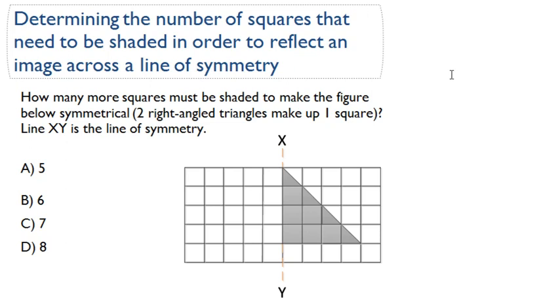So in these problems, we're given the line of symmetry, and all we need to do is figure out how many squares we need to shade in to actually reflect that image, to make a mirror image that we're given.